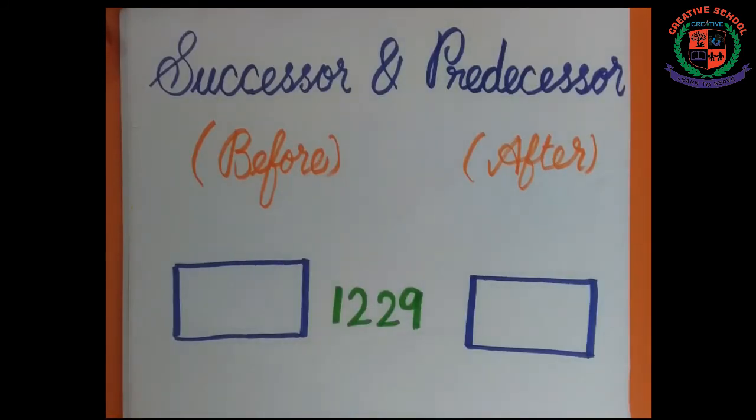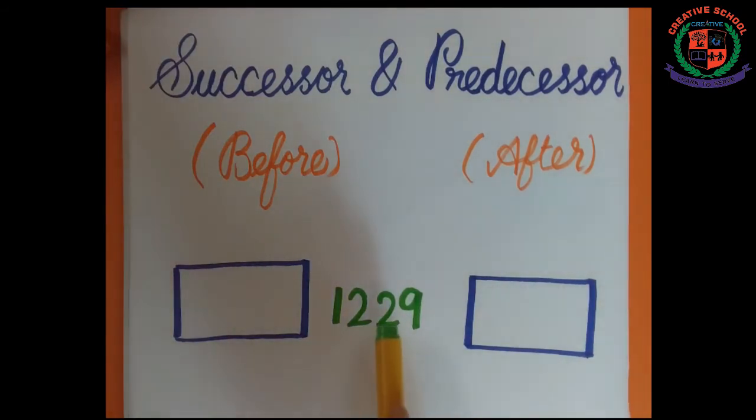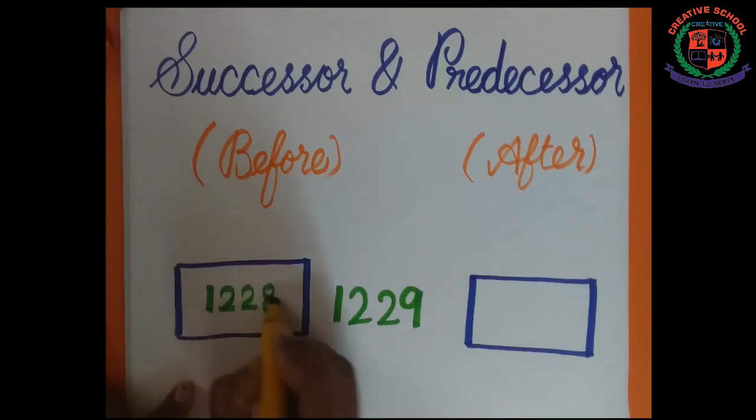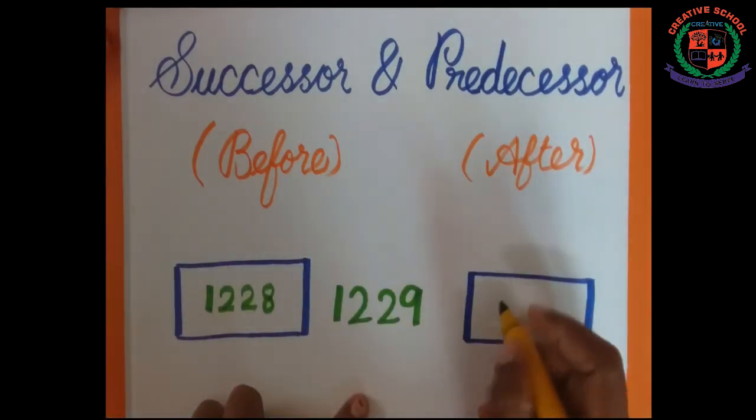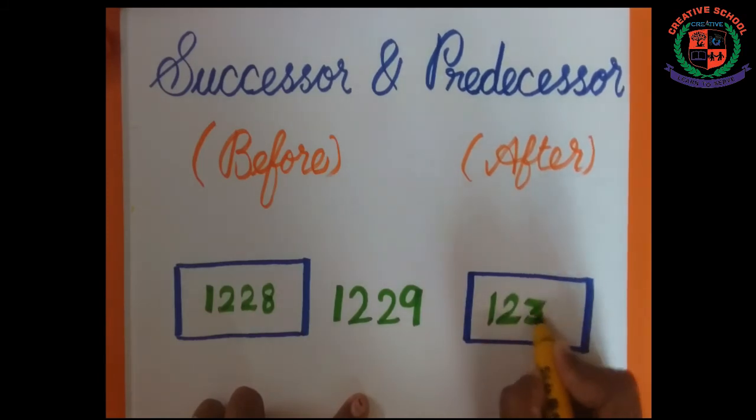We are going to see successor and predecessor. Successor means before number. Predecessor means after number. Here, the number is 1229. Which comes before this number? 1228. Then, the after number is 1230.